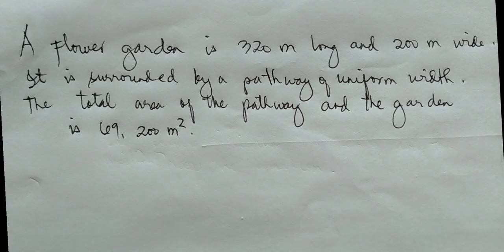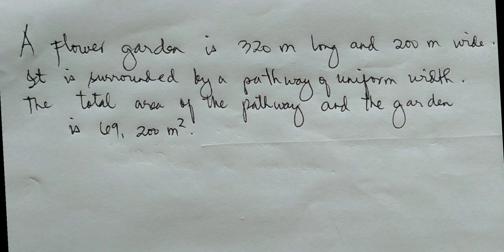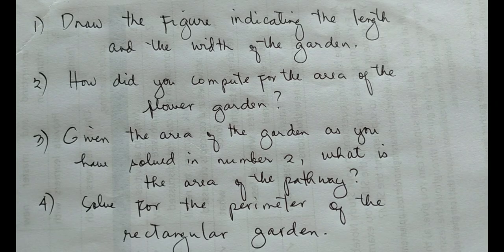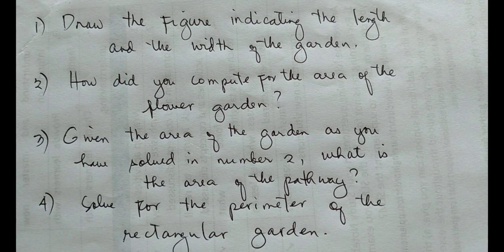Here is our problem. A flower garden is 320 meters long and 200 meters wide. It is surrounded by a pathway of uniform width. The total area of the pathway and the garden is 69,200 square meters. Number one, draw the figure indicating the length and the width of the garden. Number two, how did you compute for the area of the flower garden? Number three, given the area of the garden as you have solved in number two, what is the area of the pathway? Number four, solve for the perimeter of the rectangular garden.